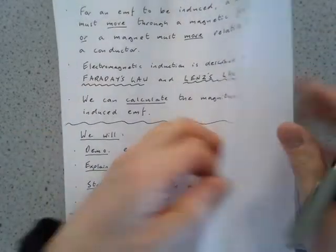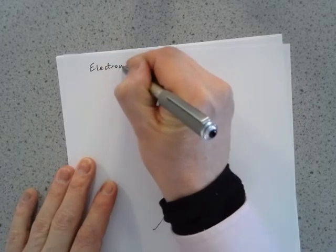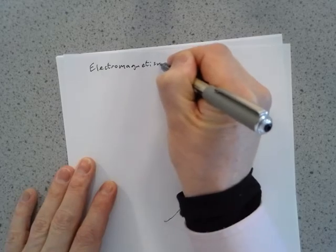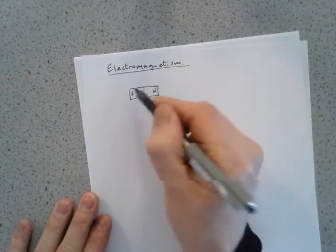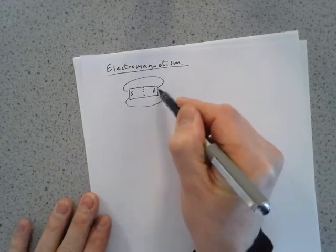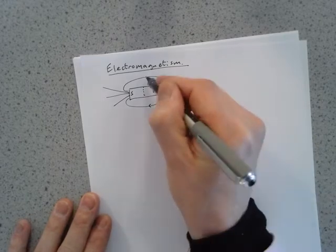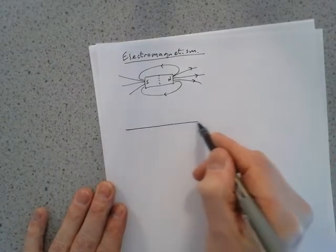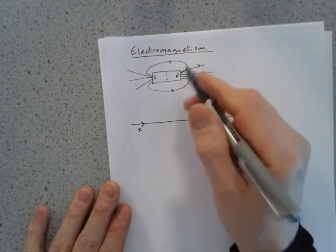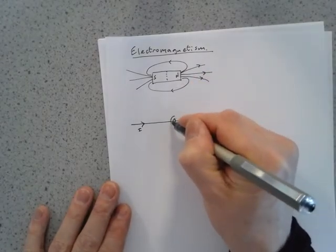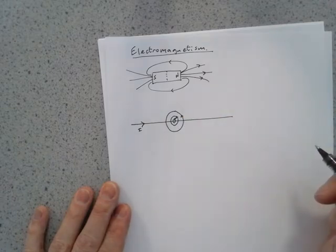Let's have a little recap. What we looked at in previous lessons was the idea of electromagnetism. We know that a permanent magnet has a magnetic field around it, which we can represent with field lines. We know that if you have an electric current — for example, a single straight wire carrying a current — then there will be a magnetic field generated around it, and the magnetic field lines are concentric circles with their direction indicated by the right-hand grip rule.